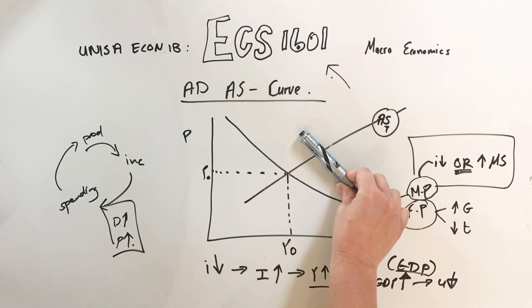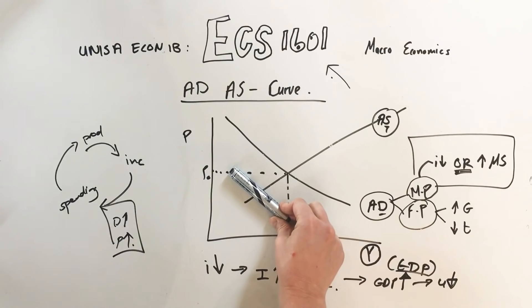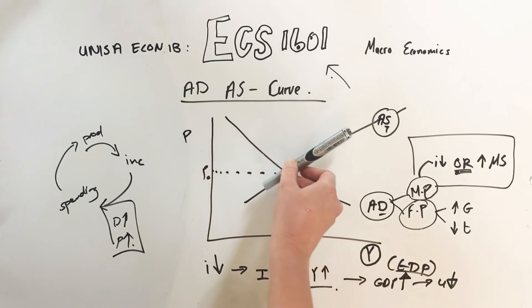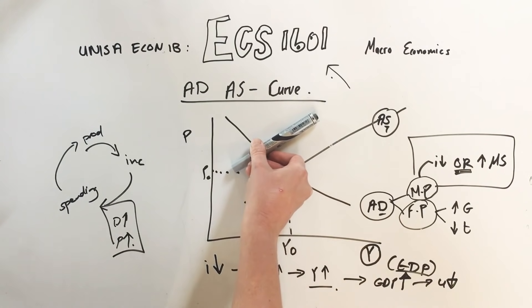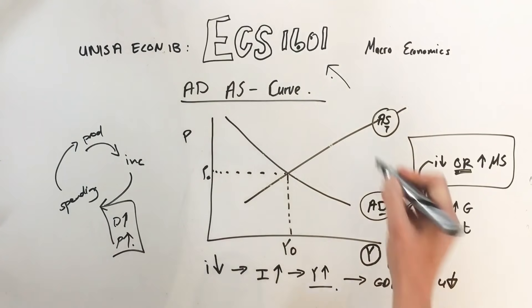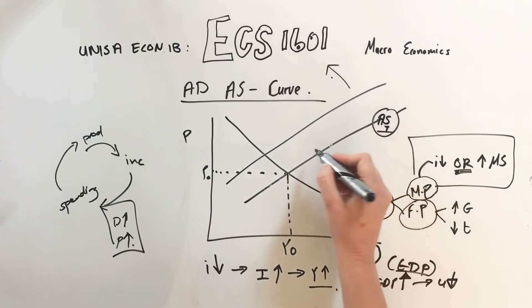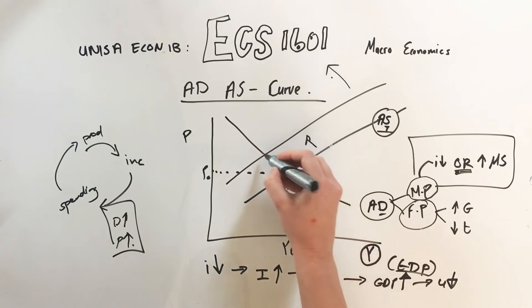Expansionary monetary policy to boost the economy. And if it moves this way, it is contractionary monetary policy. The aggregate supply curve only moves with the production factors and it causes cost push inflation.